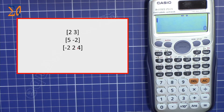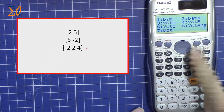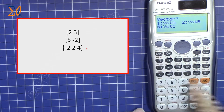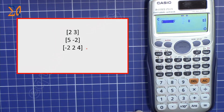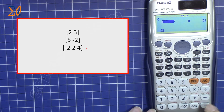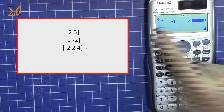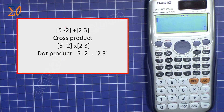Press AC to clear. Now let's store a third vector into C. Press Shift, vector, one for dimension, then three for vector C. This is a three-dimensional vector, so press one. Enter minus two, equal, two, equal, four, equal. Vector C is now stored.